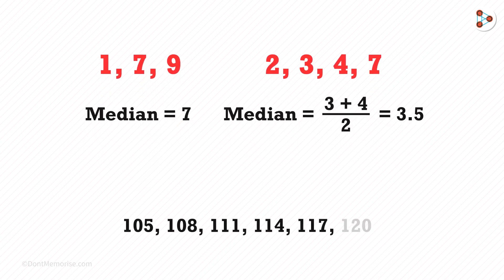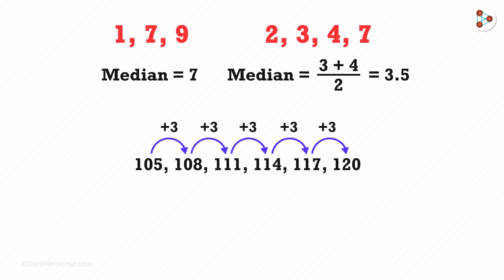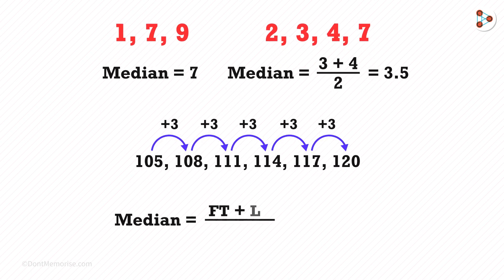So here's the next set. Notice that the common difference is 3. There is an easy method to find the median for this. The median for this is the first term plus the last term divided by 2. By solving this, we get the answer as 112.5.